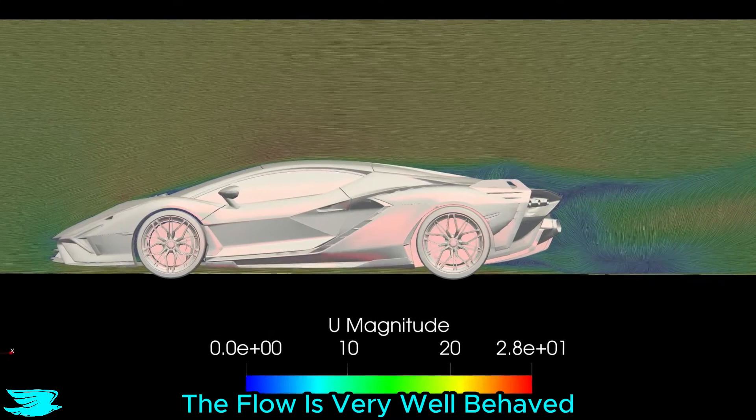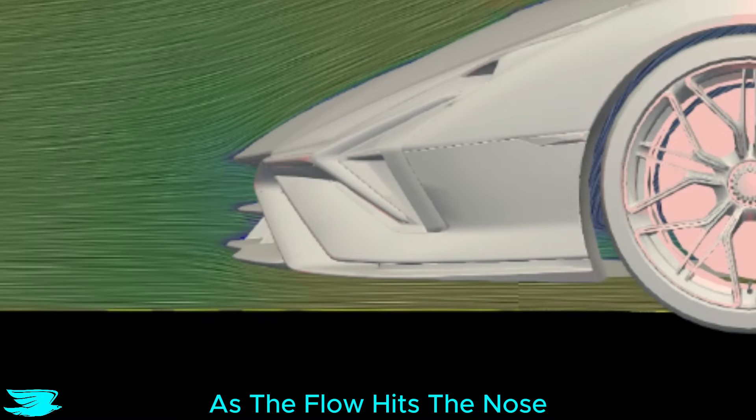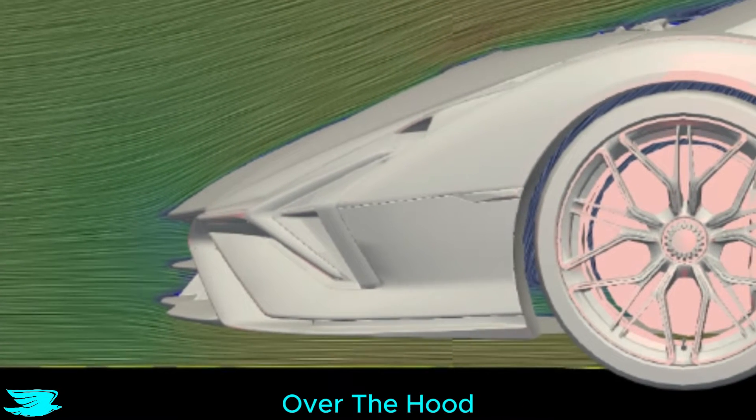The flow is very well behaved over most of the car, mainly due to the Sian's sleek and low profile. As the flow hits the nose, it gets split very crisply, resulting in no flow separation over the hood, which is good for drag.